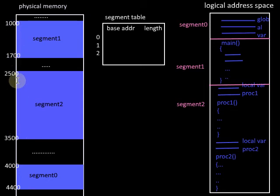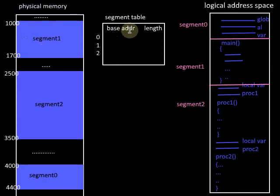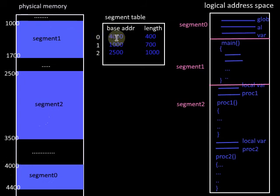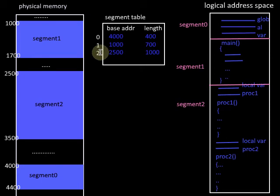In paging we have pages of equal size, hence there is no need to specify the length of each page. But here the segment sizes are varying, hence we should specify the length of each segment. Segment 0 is loaded to the base address 4000 with a length of 400; segment 1 is loaded to the base address 1000 with a length of 700; segment 2 is loaded to the base address 2500 with a length of 1000.